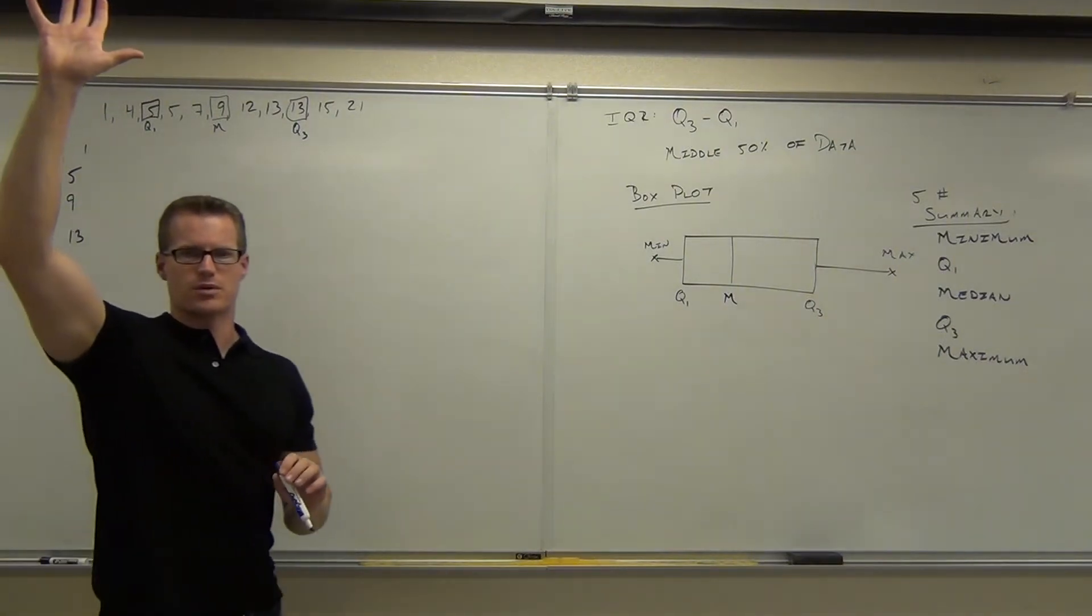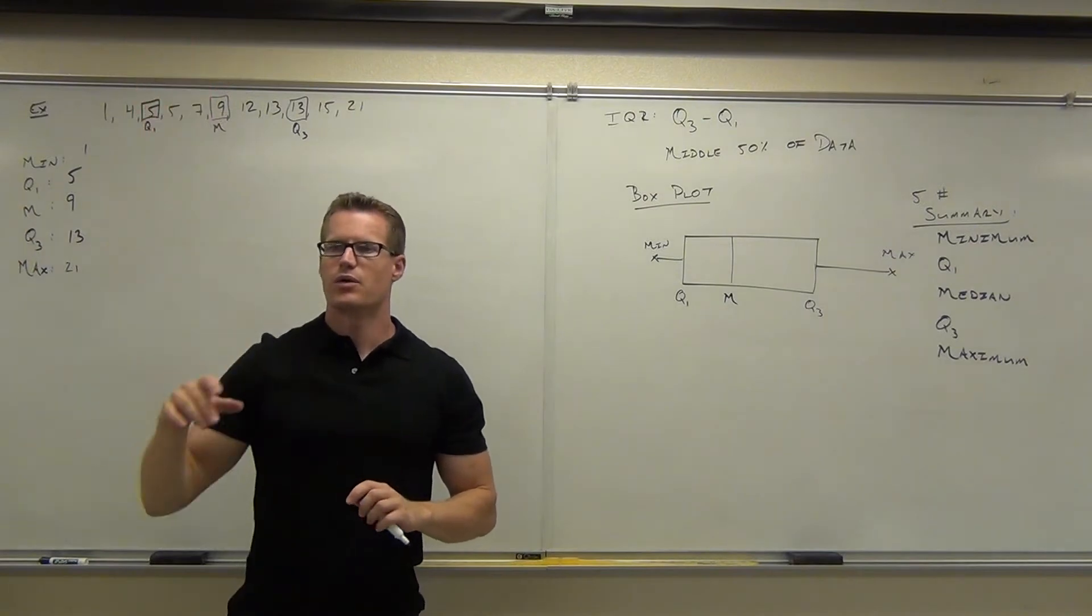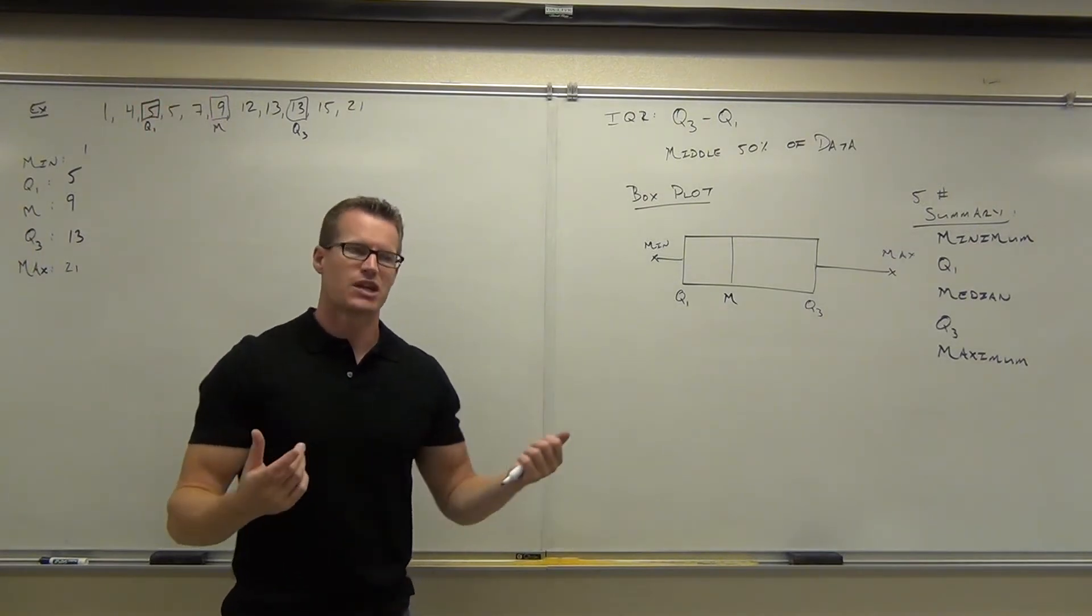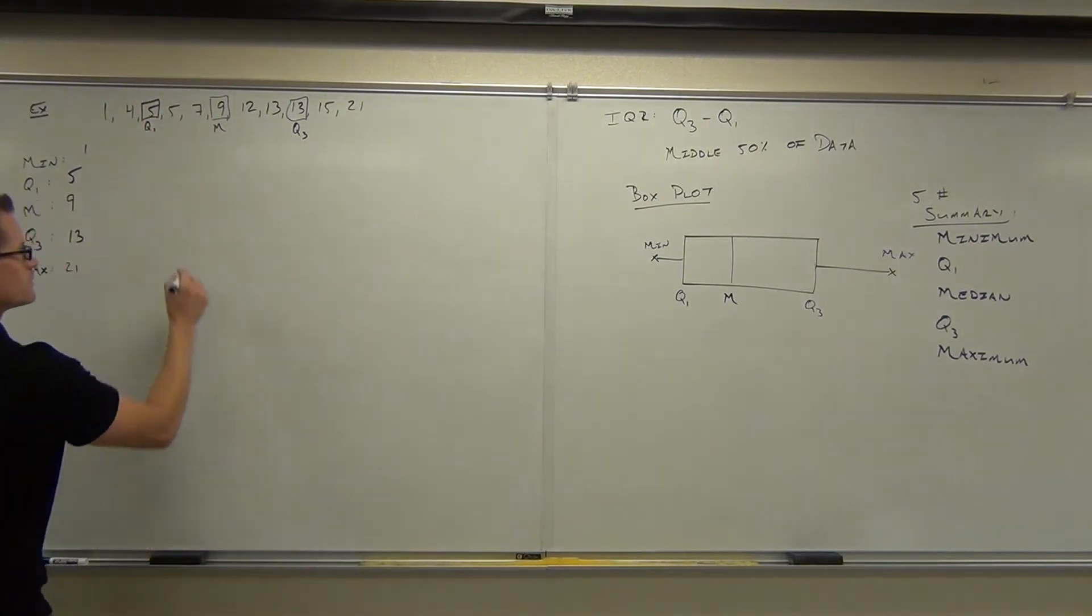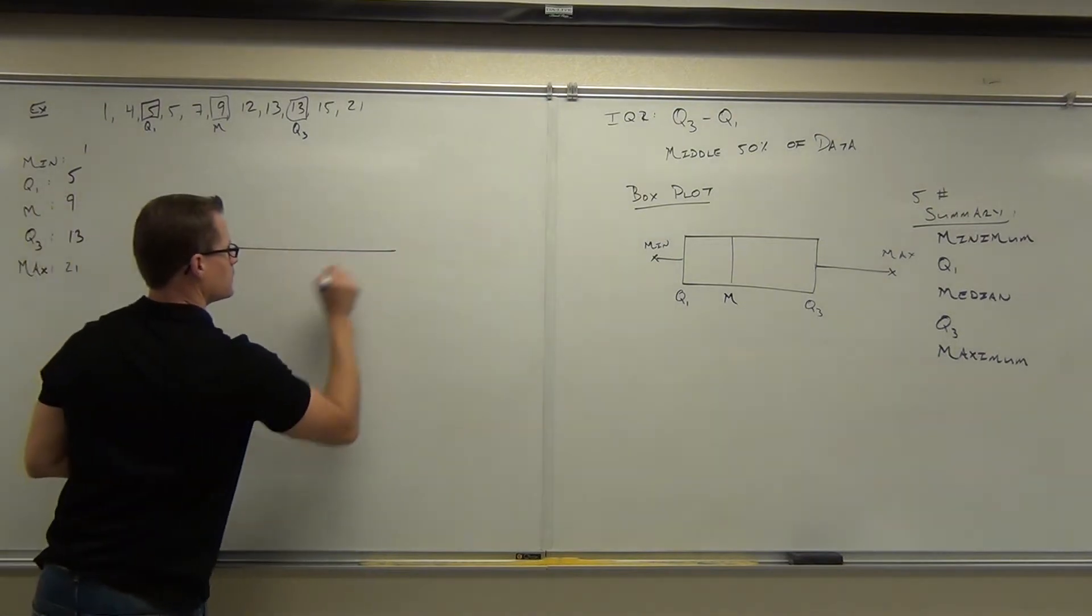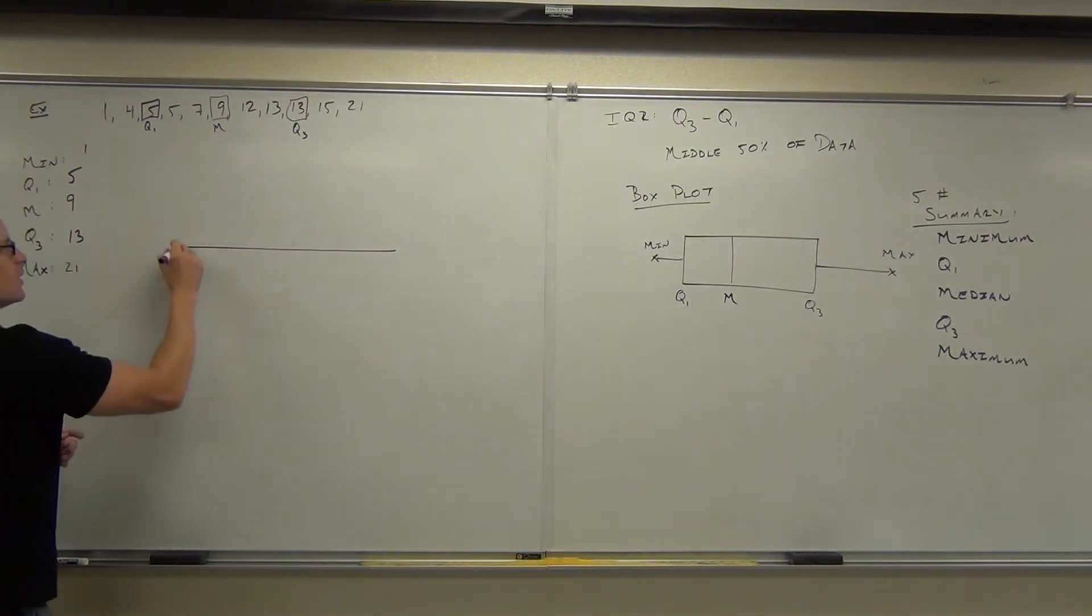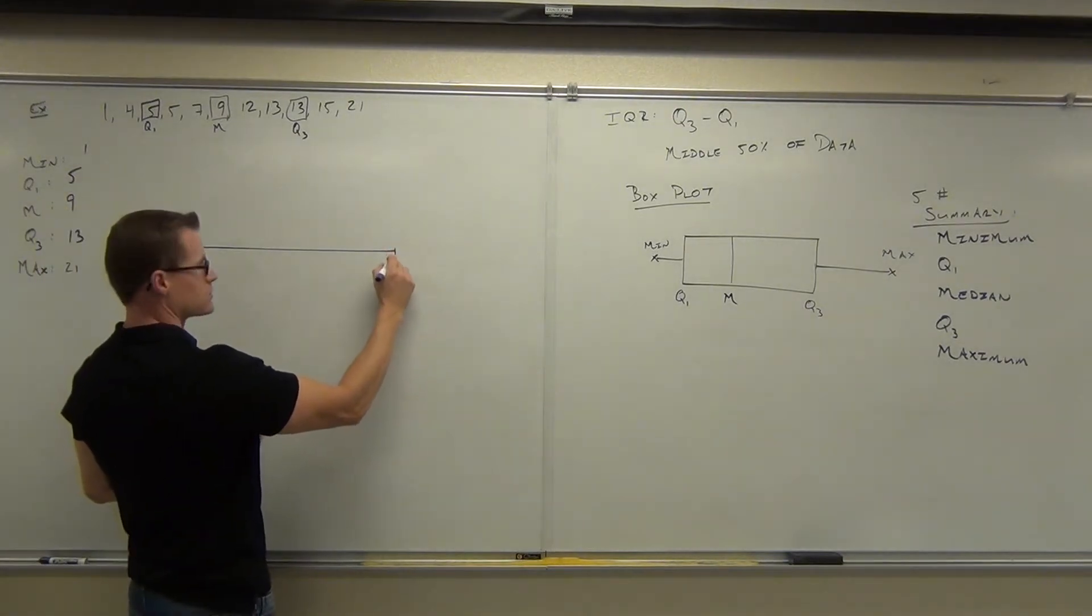Were you able to find the five number summary? Good. Now, if we're going to go from here to a box plot, essentially all you do is make a number line and make it to scale. Over on the left hand side you put 1, right hand side you put 21.